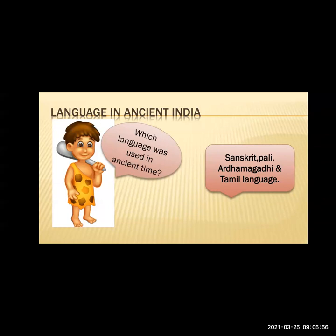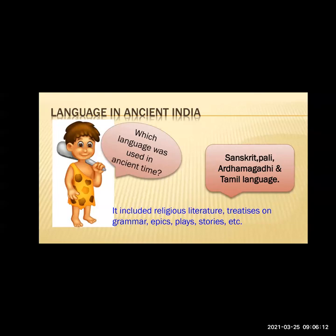These languages included religious literature, treatises on grammar, epics, plays, and stories. With the help of these languages we get literature — all written work is known as literature. A treatise is something written very lengthily on a topic, but systematically. So based on all these languages, grammar, ethics, plays, and stories were all included.